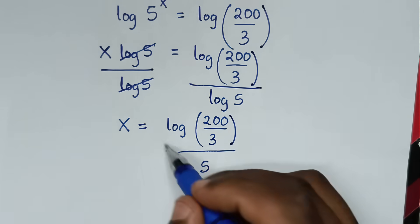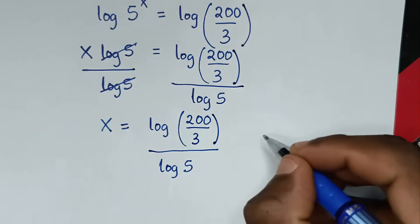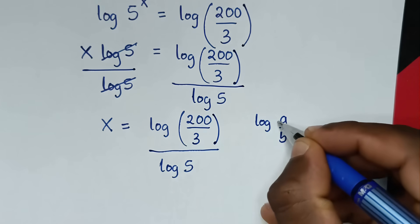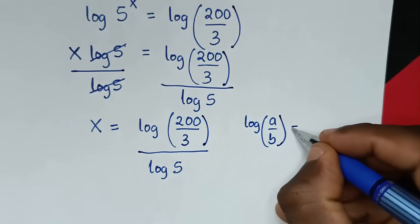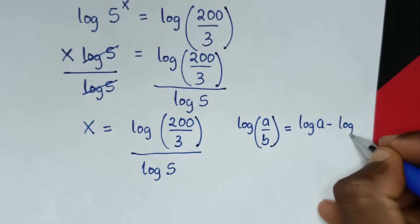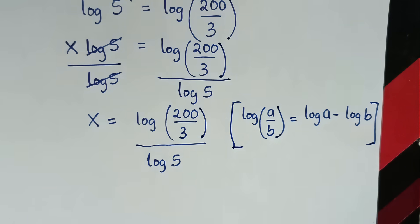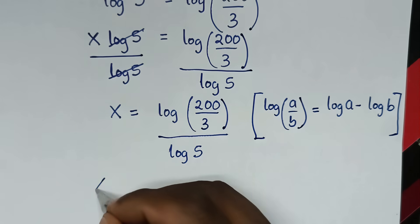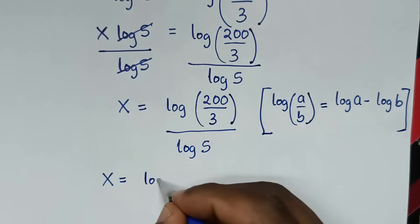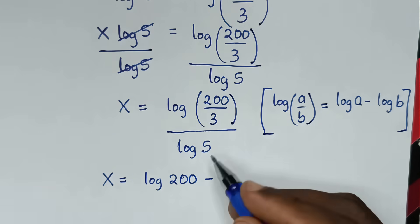Then in the next step, from this part here, log of 200 over 3 is in the form of the logarithmic quotient rule, which is log of a over b equals log of a minus log of b. So it will be x is equal to log of 200 minus log of 3, all over log of 5.